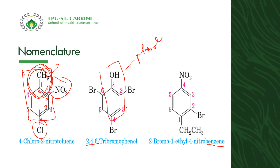If we start numbering from bromo as carbon one, it gives 1, 3, 6 — which is higher. Starting from ethyl gives 1, 2, 4 — the lowest set. Therefore the compound is named 2-bromo-1-ethyl-4-nitrobenzene. Again, if one substituent imparts a special name, that is the parent. If none do, number for the lowest set and arrange alphabetically, ending with benzene.